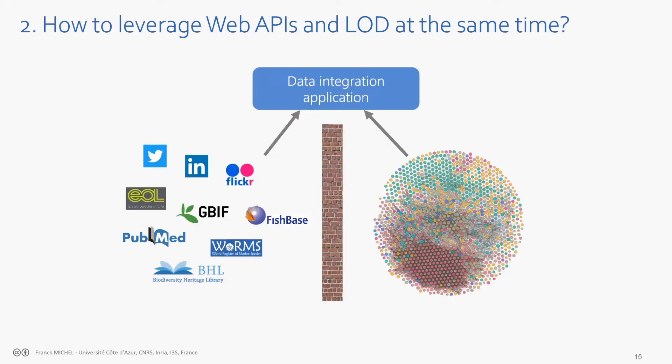Another limitation is that web APIs use internal resource identifiers. For example, each YouTube video has an identifier in YouTube, but is there a URI that identifies the video itself, whatever its representation? You don't really get globally unique, shareable web identifiers. If you want to write an application gathering information from several web APIs at a time, you have to develop connectors — say for WoRMS, FishBase, and GBIF — and then manually align the information coming from each source. This is feasible but time-consuming.